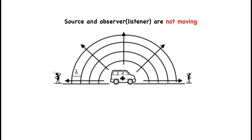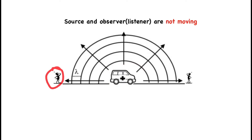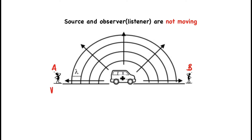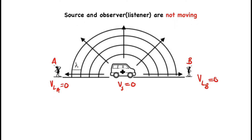In the Doppler effect, we're going to look at the observed or perceived change in pitch or frequency between the source and the listener. The source is the one that emits the sound waves, and these are the observers — observer A and observer B. The source emits the sound wave with frequency FS, the frequency of the source.